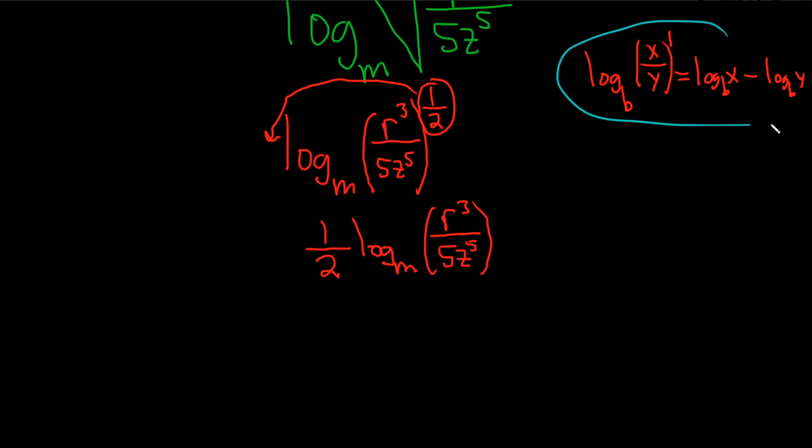So now we can use this rule here, which is the quotient rule. So this one-half on the outside is just going to hang out, so I'm going to put it over here. One-half, parentheses, and just log of the top piece. So log base m of r cubed. And then the fraction turns into subtraction. So minus log base m of the bottom piece, so 5z to the 5, just like that, parentheses.